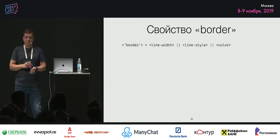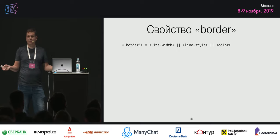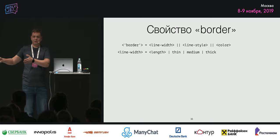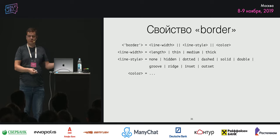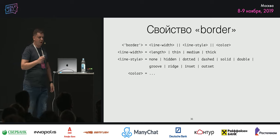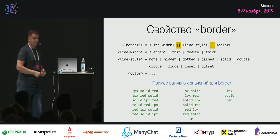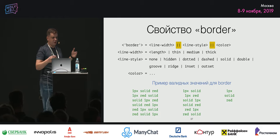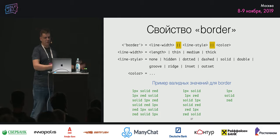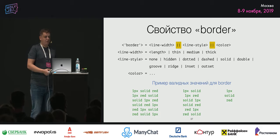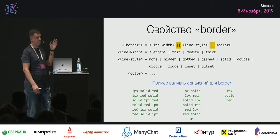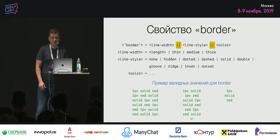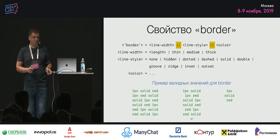Ещё один пример — border. Оно состоит из трёх компонент: ширина (длина либо какие-то ключевые слова), стиль (набор ключевых слов) и цвет. Но на самом деле очень важен именно комбинатор «две вертикальные черты». Оказывается, можно в любом порядке перечислять ширину линии, стиль и цвет. Это обычно сюрприз для многих разработчиков, потому что все обычно пишут длину, стиль и цвет. Но по спецификации можно использовать любую перестановку и использовать либо все три элемента, либо два, либо один — это всё будут валидные значения.